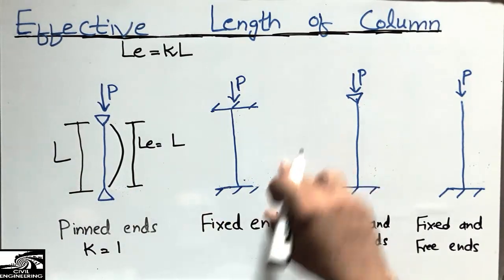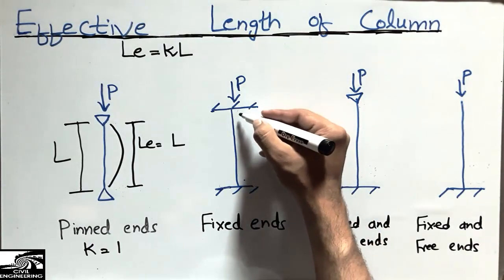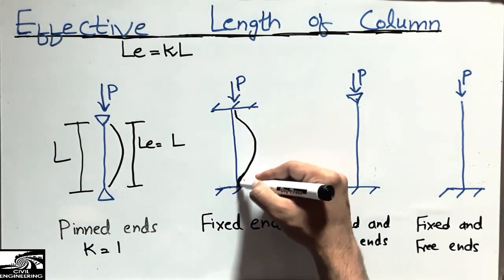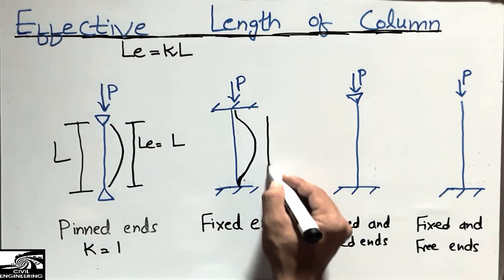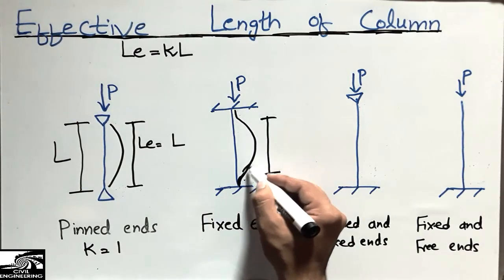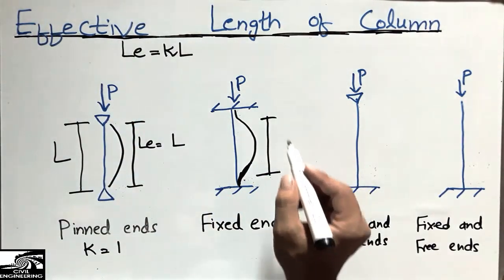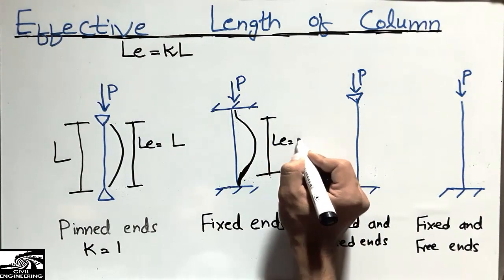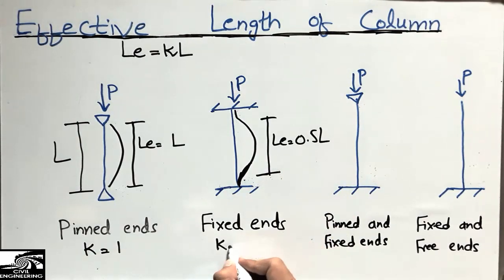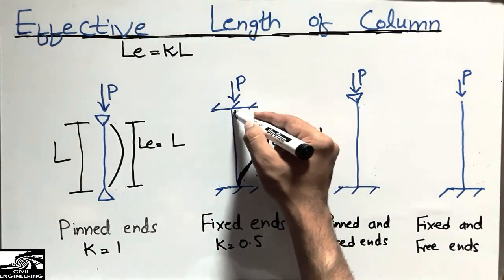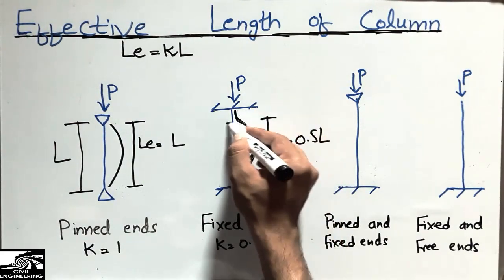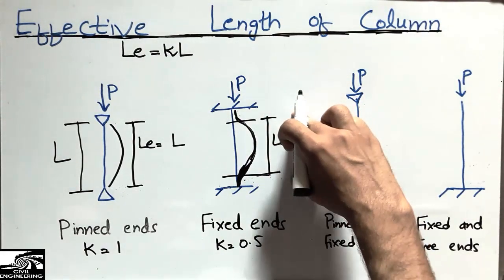When load is applied on a column with two fixed ends, the fixed ends will not move, but the column will start deflecting and buckling. The effective length will be less compared to the pin-pin case. The effective length will be 0.5L, meaning the K value is 0.5 — half of the pin-pin case.